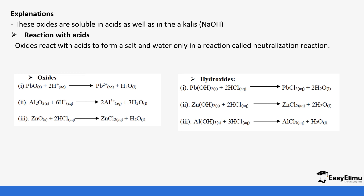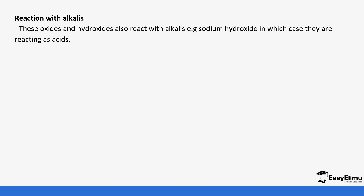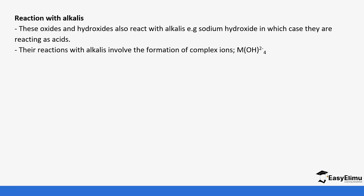For the hydroxide, it's the same. Lead hydroxide reacts with hydrochloric acid to form lead chloride and water. For the reaction with alkali, this is the uniqueness with these three metals. These oxides and hydroxides also react with alkali — for example, sodium hydroxide. They behave like acids. Their reactions with alkali involve the formation of complexes, and you'll notice the complexes have a complex ion.